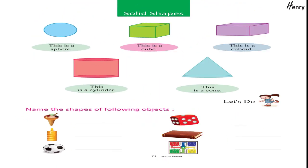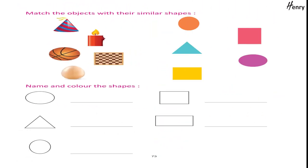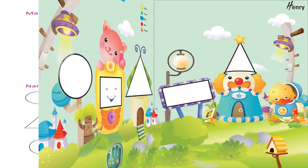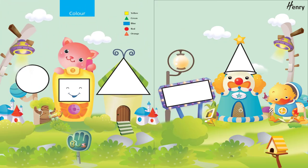Solid shapes: this is a cube, this is a cuboid, this is a cylinder, this is a cone. Let's do: name the shapes of the following objects. Match the objects with their similar shapes. Name and colour the shapes: yellow, green, blue, red, orange.